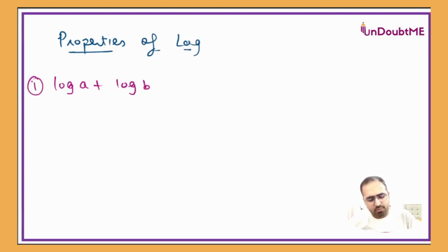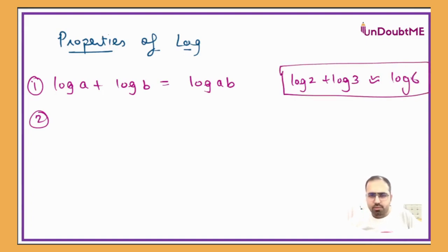So the first one is log a plus log b will be equal to log ab. For example, if I have log 2 plus log 3, so this can also be written as log 6. How it will be used when we do the question, you will understand.